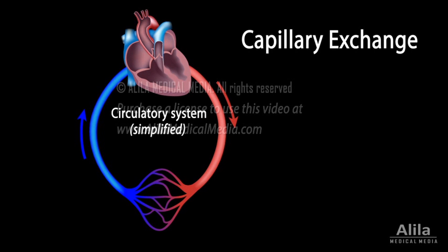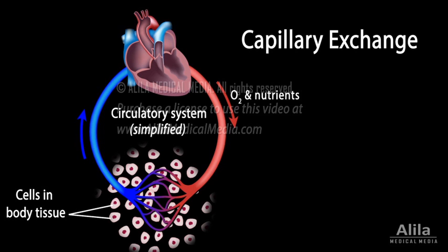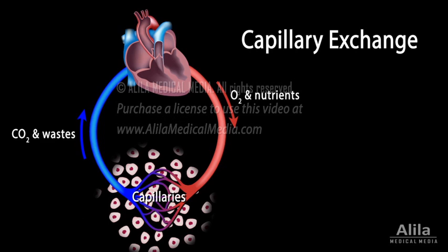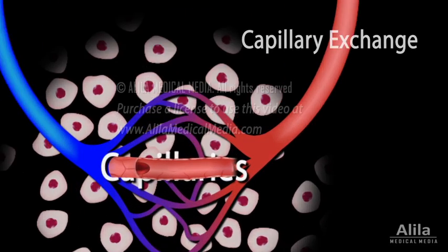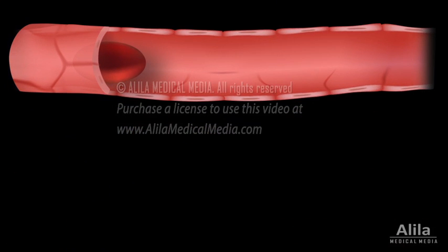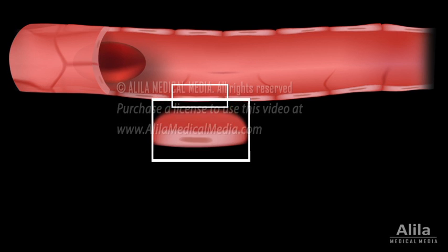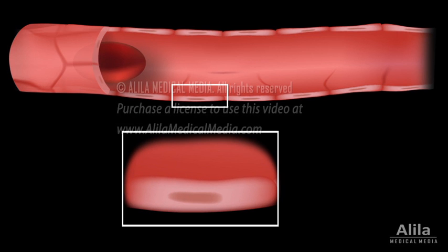The major purpose of the circulatory system is to bring oxygen and nutrients to body tissues and remove wastes. This exchange happens in the smallest blood vessels called the capillaries, whose walls consist of a single layer of endothelial cells. Substances move between the blood and surrounding tissue in several ways.